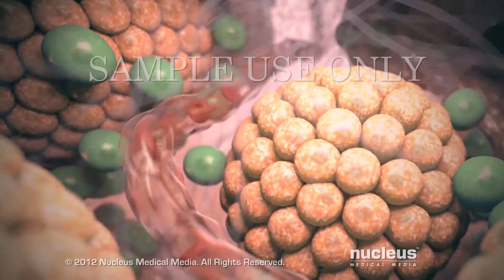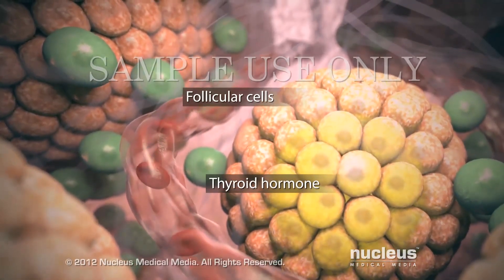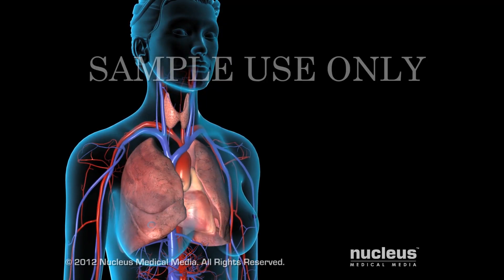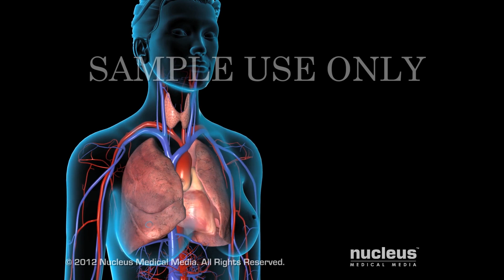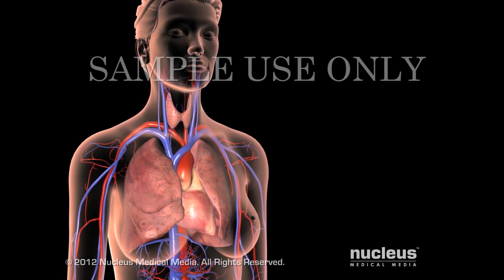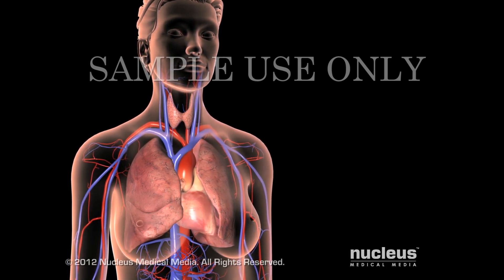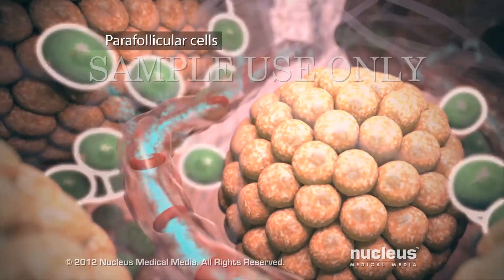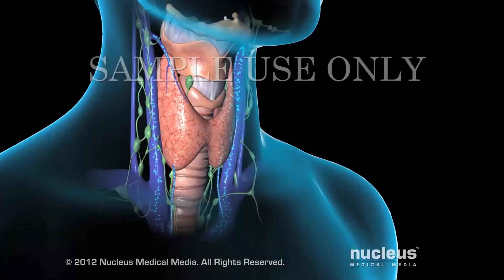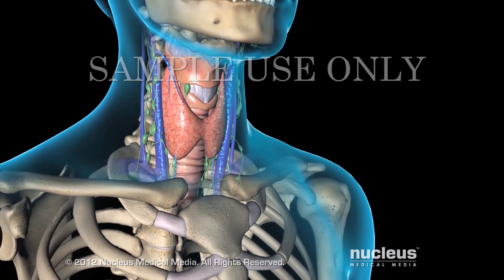Inside your thyroid gland, follicular cells make thyroid hormone. Your body uses thyroid hormone to increase your energy and raise your body temperature when necessary — for example, these effects help offset the heat your body loses when exposed to cold weather. Parafollicular cells in your thyroid make calcitonin, which is thought to stimulate the formation of new bone.